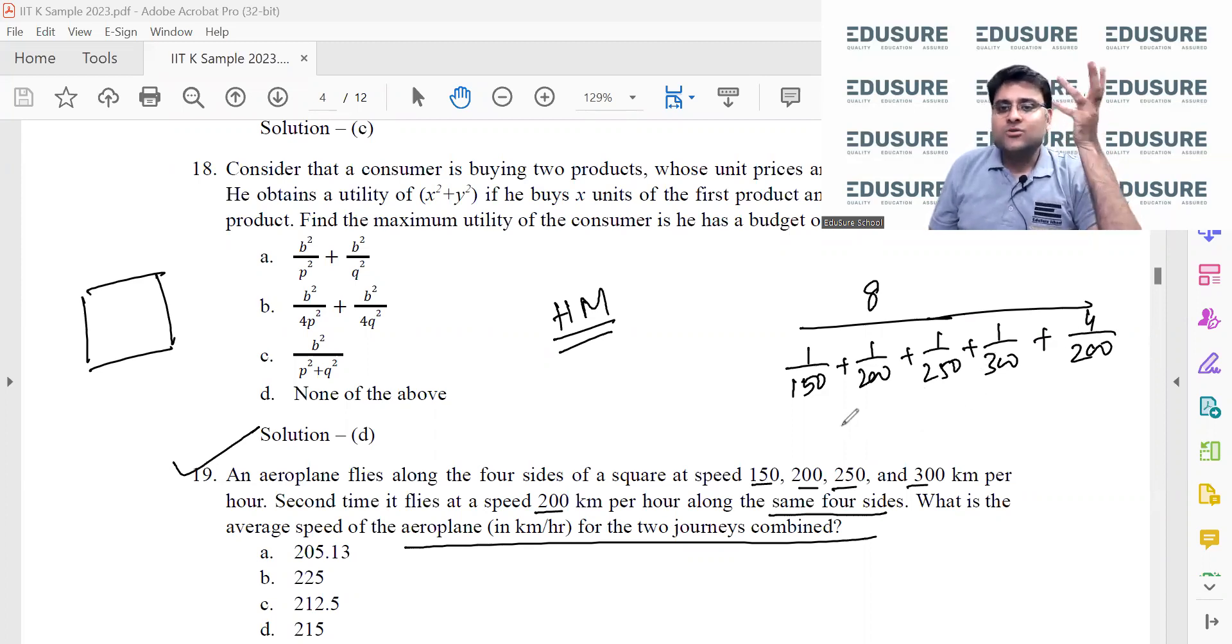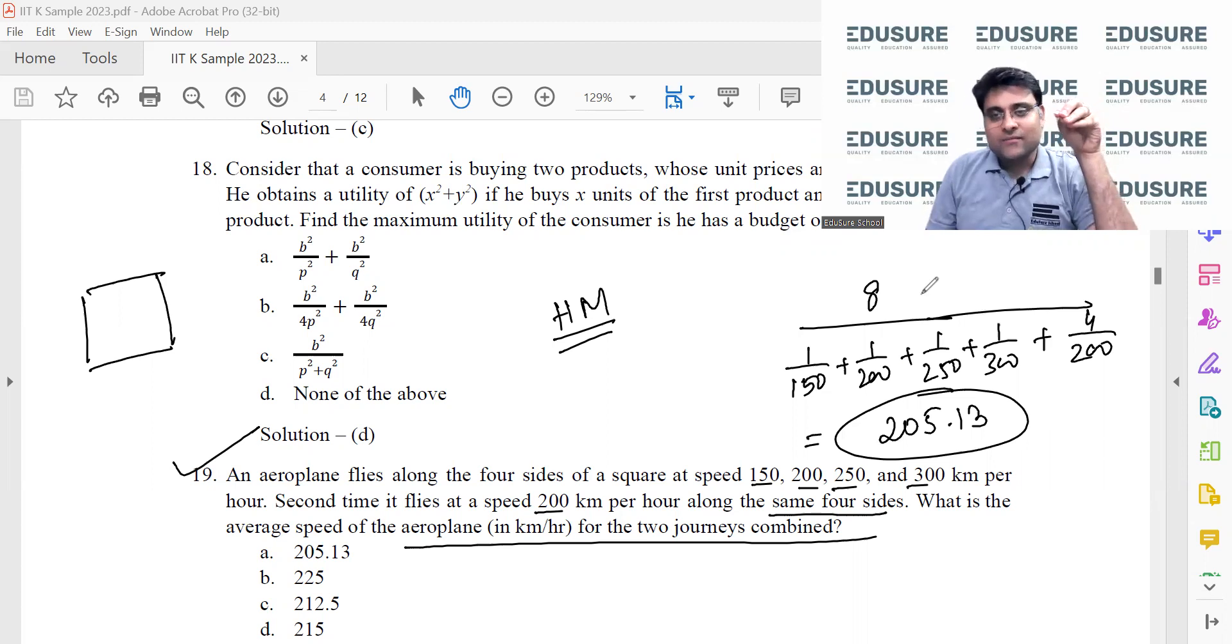Then you simplify it and you will get 205.13. You have to use a calculator, no two ways about it. This is one of the ways if you already know that you need to use harmonic mean. Did you know that you need to use harmonic mean in order to find the average speed? Yes, okay, good.